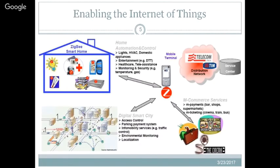ZigBee enables the Internet of Things through ZigBee-enabled devices at home, smart cities, m-commerce services, and telecom services. All are integrated and accessible through mobile phones. Using protocols like 6LoWPAN, which provides an interface between the ZigBee coordinator and the internet, you are able to control everything over IP. This represents the complete panorama of IoT which ZigBee aspires to enable.